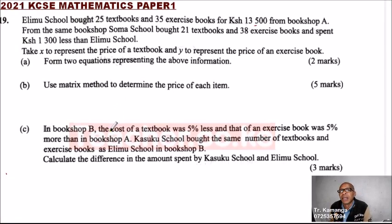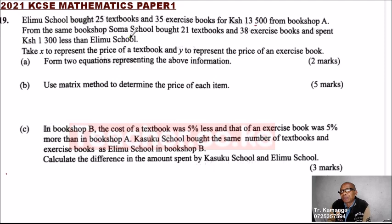Question number 19. Erimu school bought 25 textbooks and 35 exercise books for 13,500 Kenya shillings from bookshop A. From the same bookshop, Summer school bought 21 textbooks and 38 exercise books and spent 13,000 shillings.